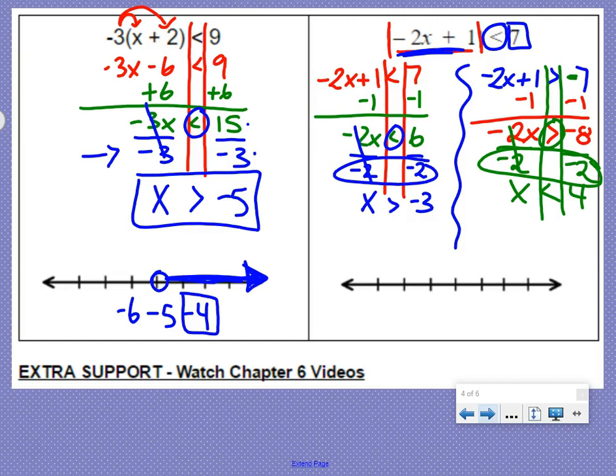So we have two pieces here. We have x is greater than negative 3 and x is less than 4. So we need to graph both of those.